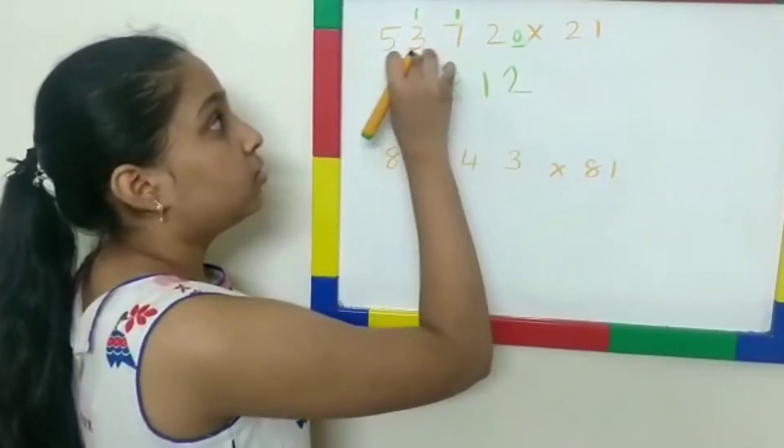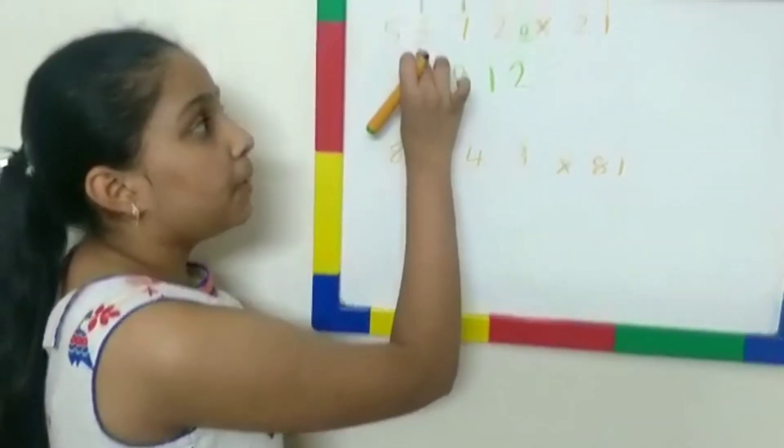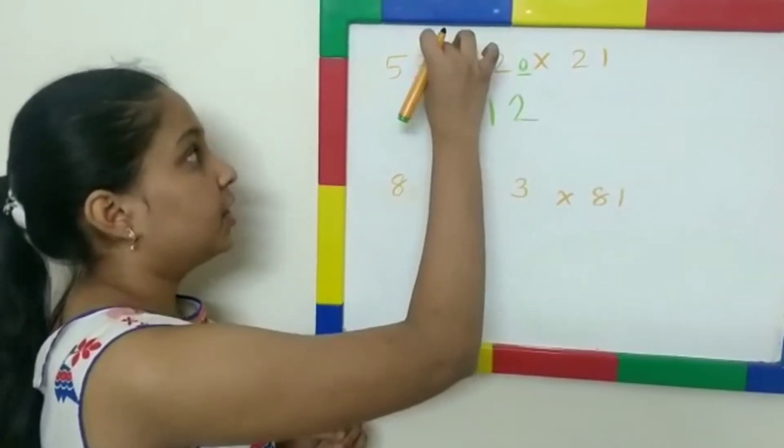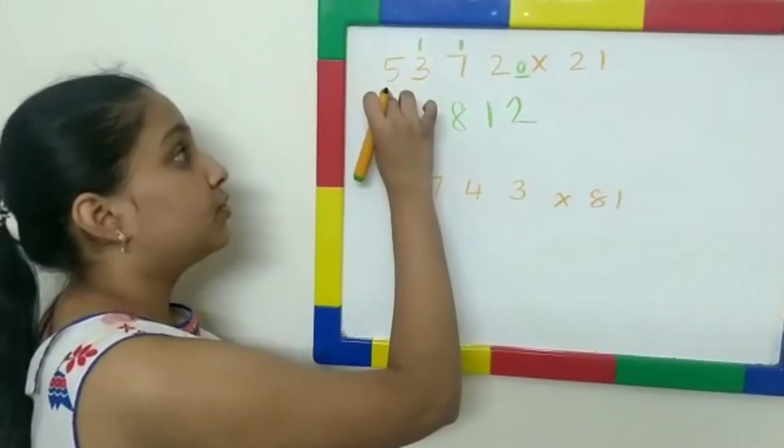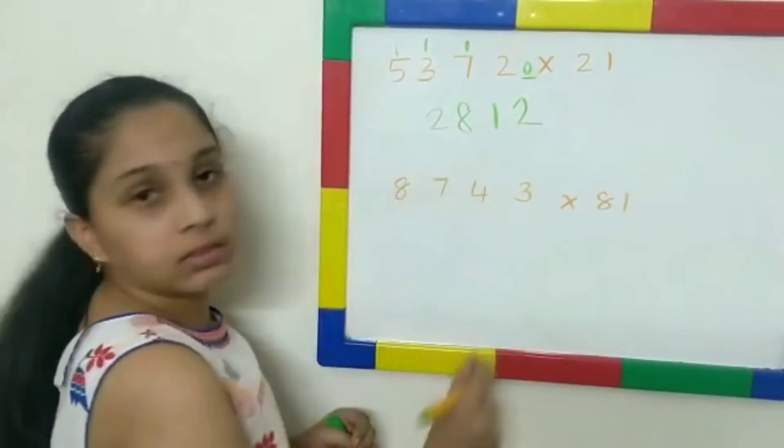2, now, these 2 are left. We start with 3. 2 multiplied by 3 gives 6. Plus 1, 7. Plus 5, 7 plus 5 gives 12. 1, 2, okay?